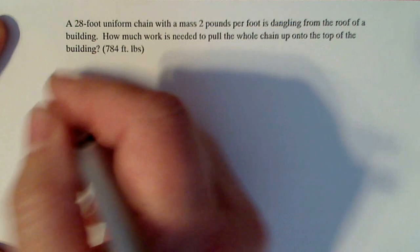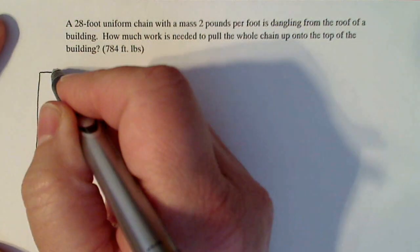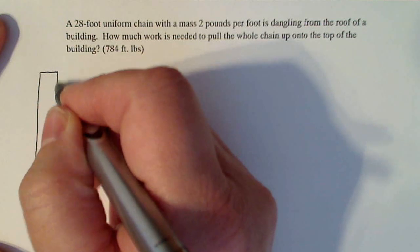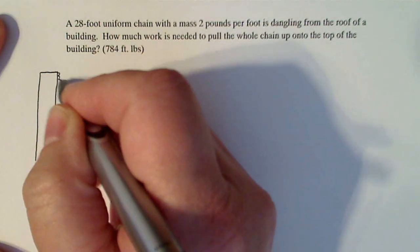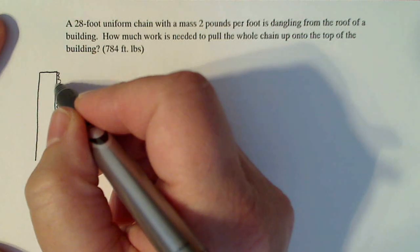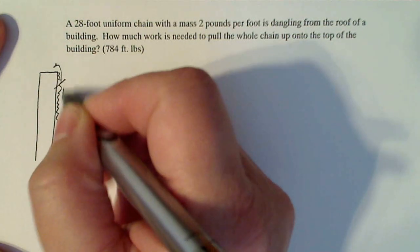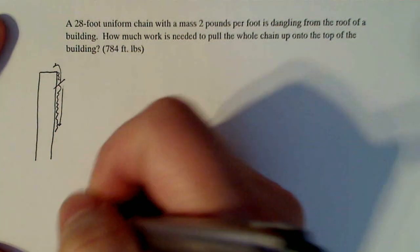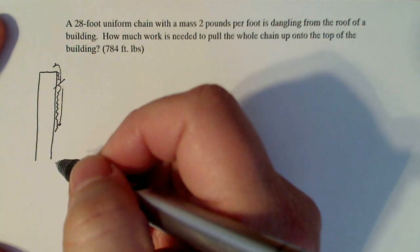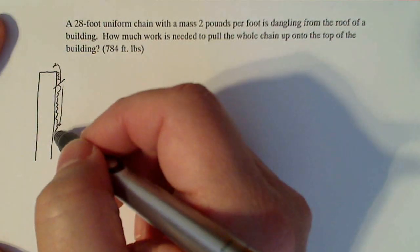If you think about it, so let's just say that this is the building, and the chain is dangling over the side of the building here. As soon as he takes just this much up over the top, the rest weighs less. So every unit of measure that he pulls over the top, the amount of force or weight of the chain changes.